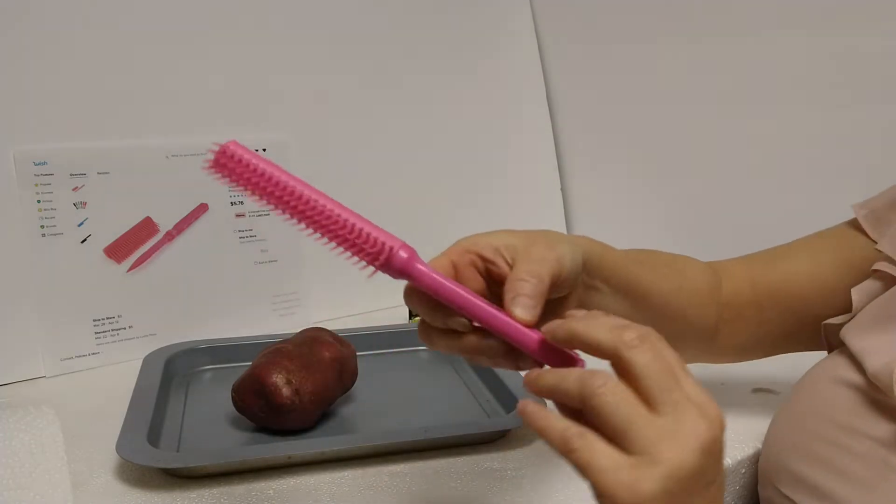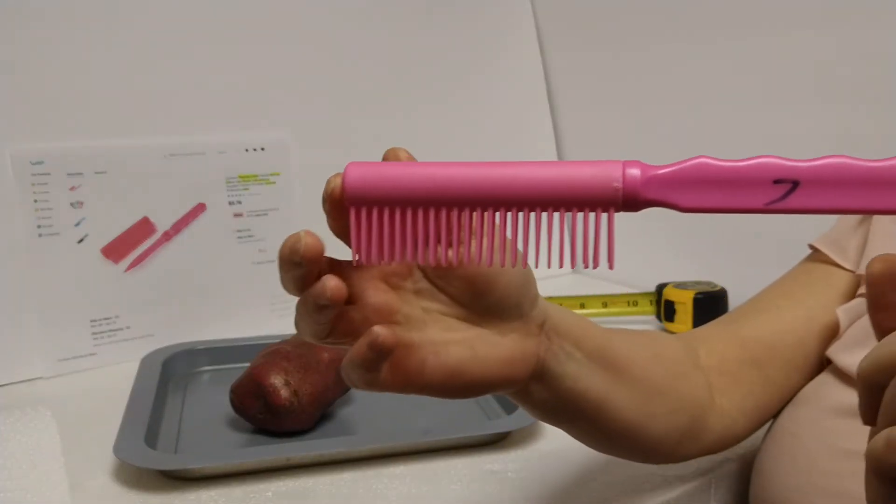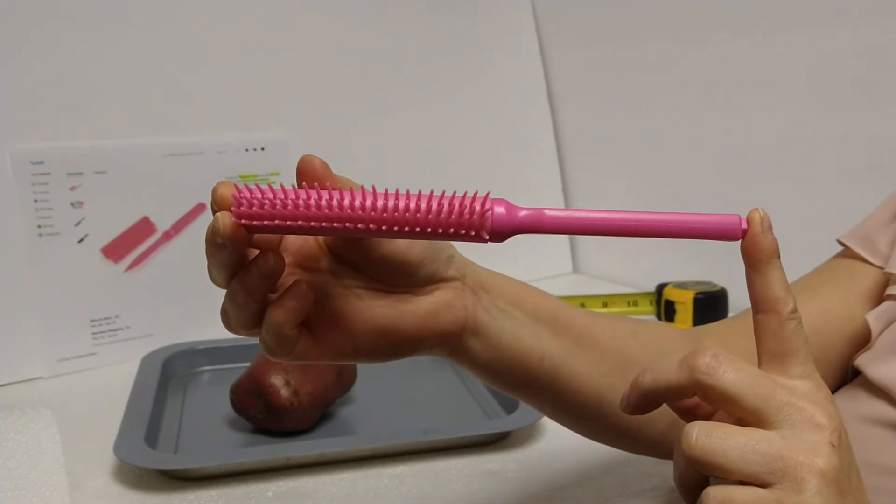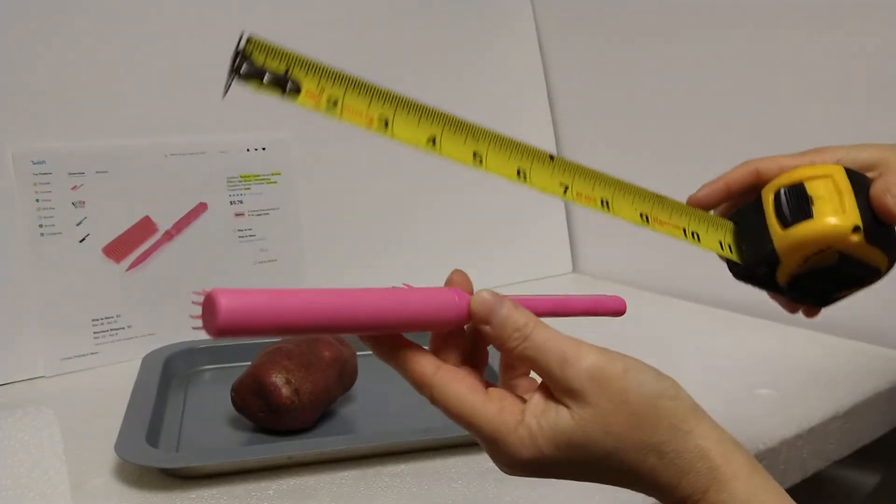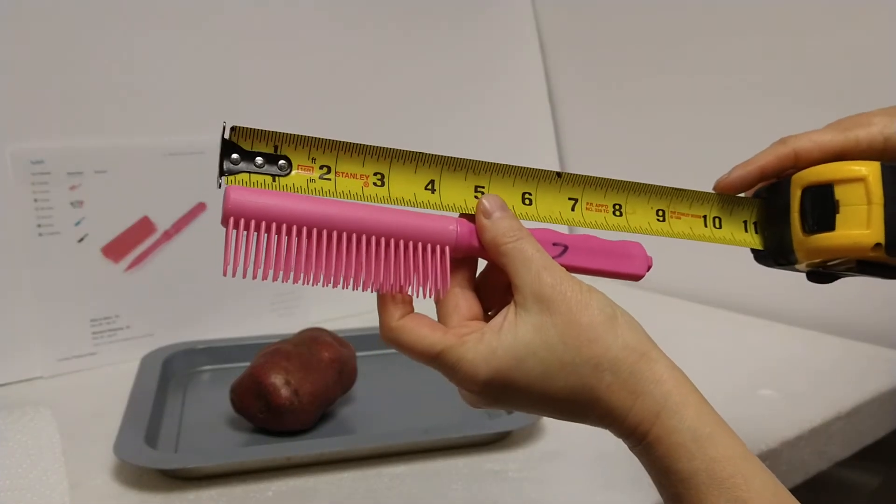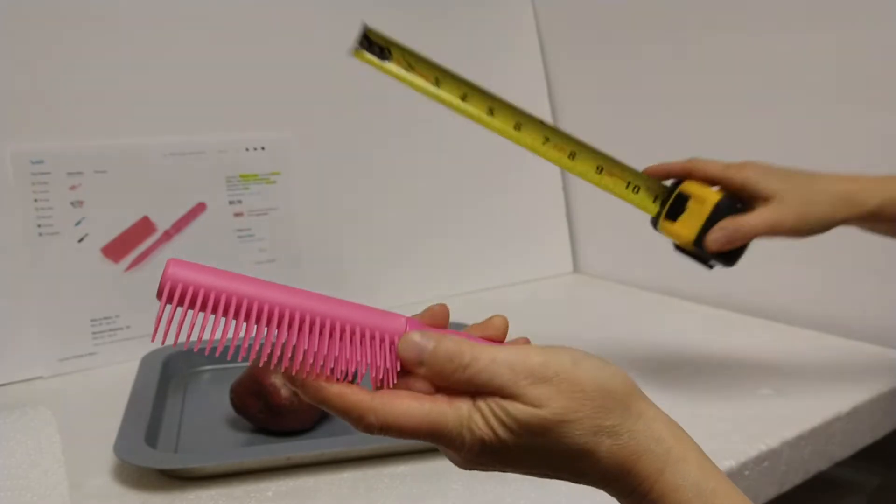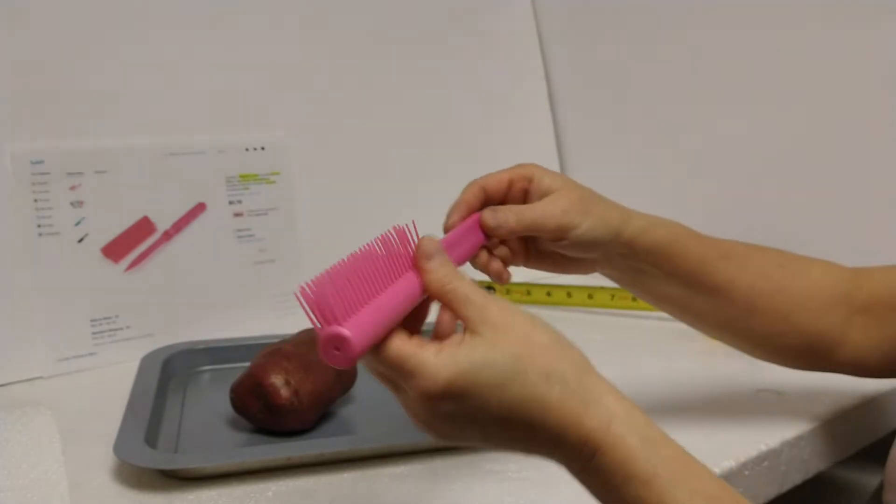So first of all, it's a comb that you can carry around conveniently in your purse. It is eight inches long, eight and a quarter inches long. That's to start.